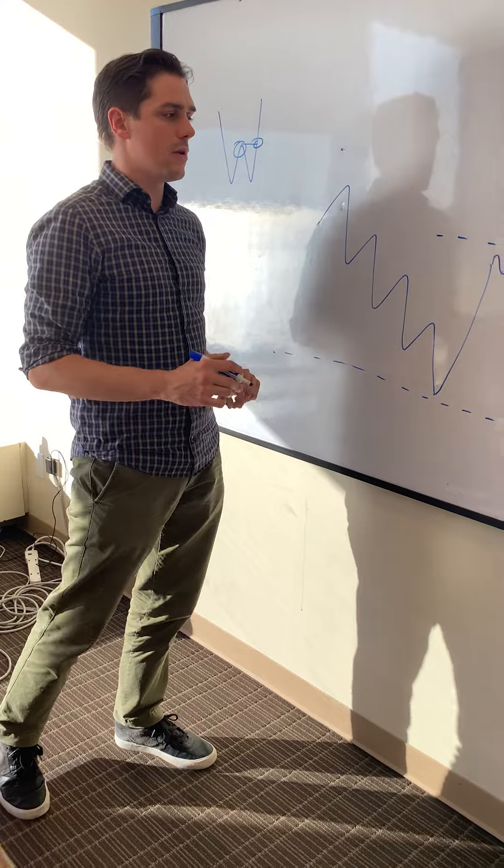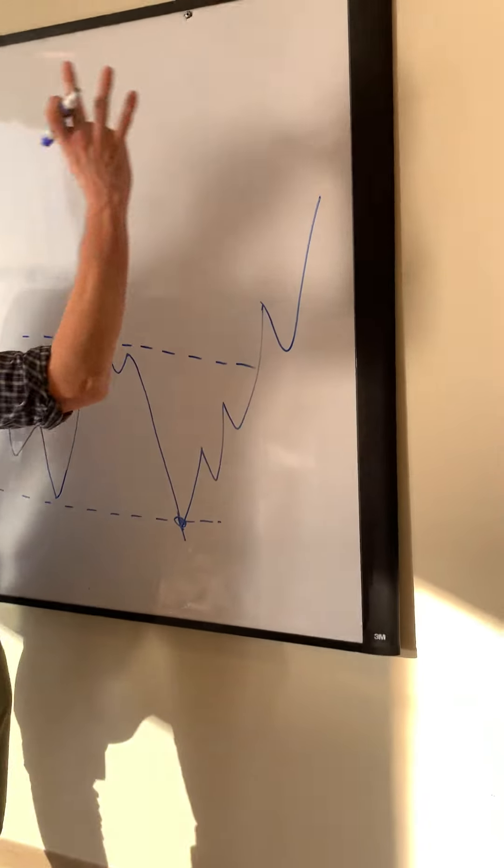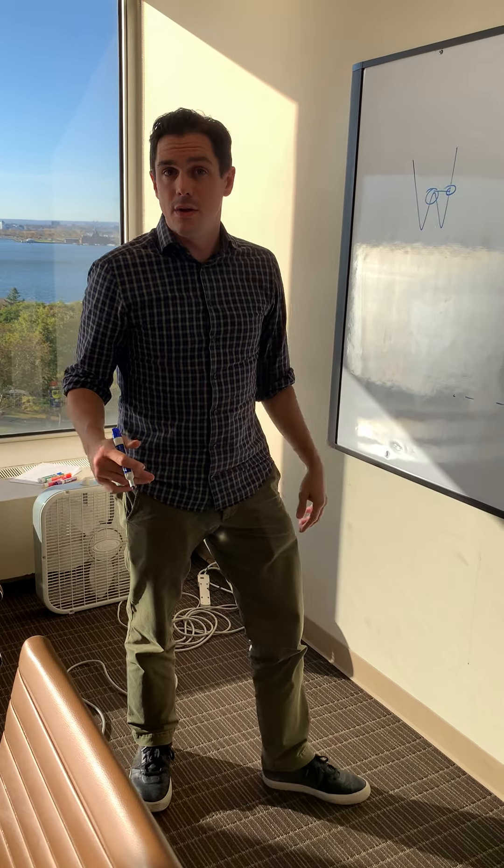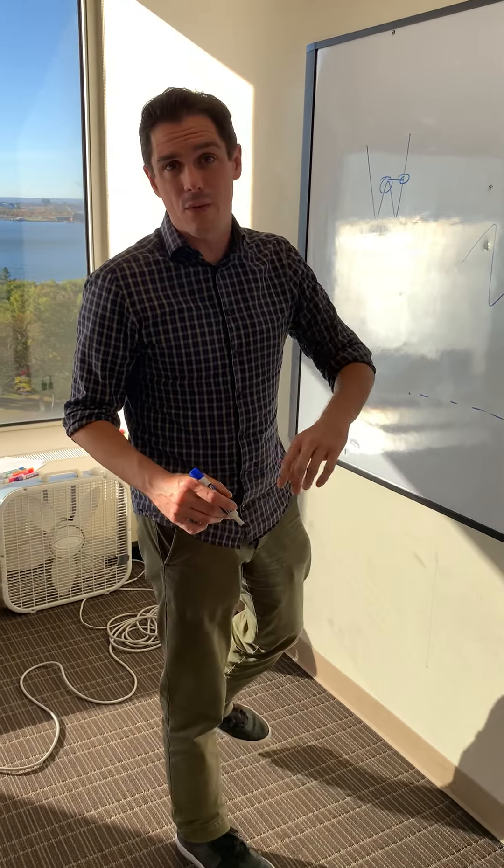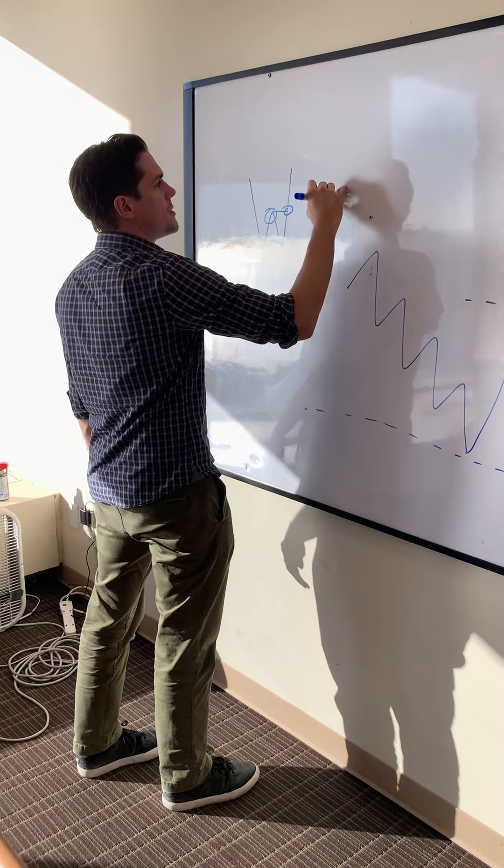We also have double tops, which is another example of a reversal pattern. It's the same thing in reverse. It's oftentimes referred to as an M pattern because it looks like the letter M.